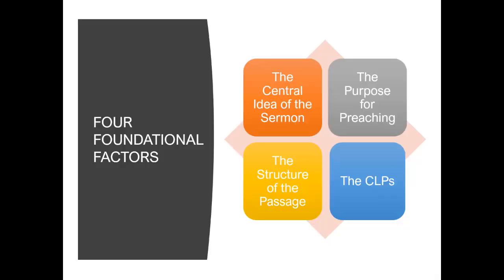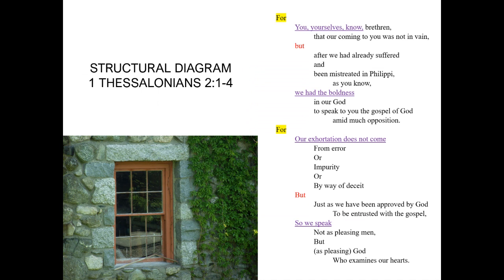Should your sermons have three points or not? During medieval times, there was a rigid structure for sermons in England — the sermon had to have a main theme divisible by three significant words. Robert de Baseborn in 1322 wrote about this. Not true, of course. The frame of the sermon is controlled by four foundational factors: the central idea of the sermon, the purpose for preaching, the structure of the passage, and the contemporary life parallels. We frame a sermon like a builder frames a window — the surrounding structure gives the building structural integrity.